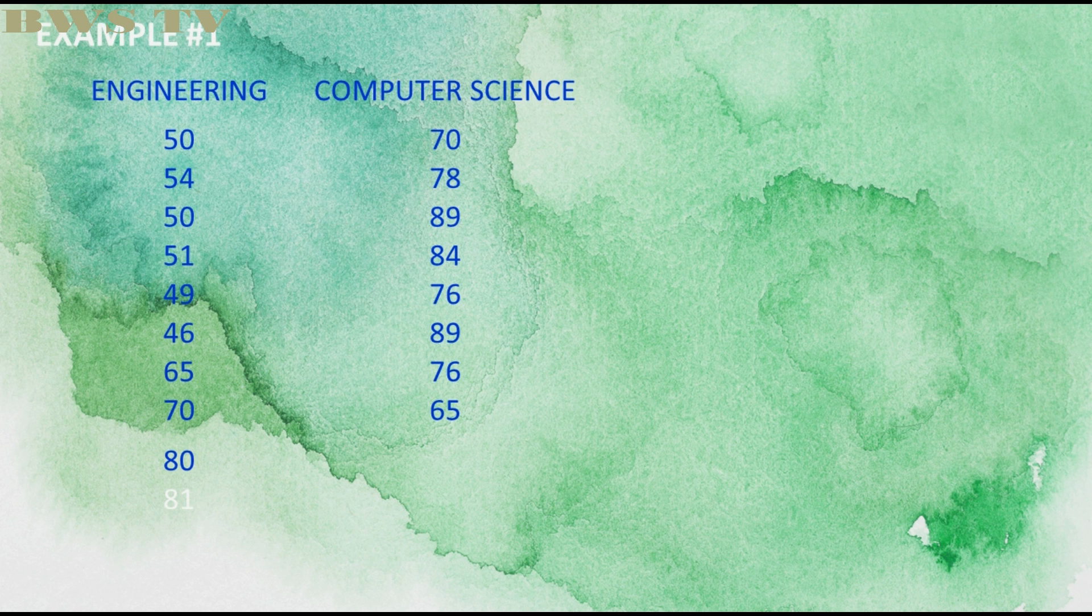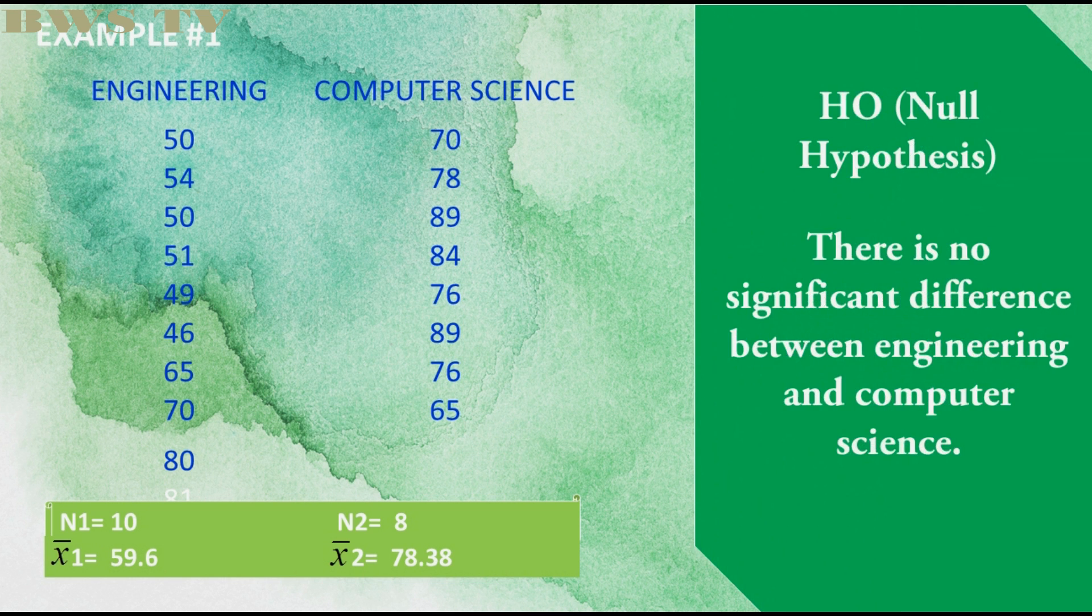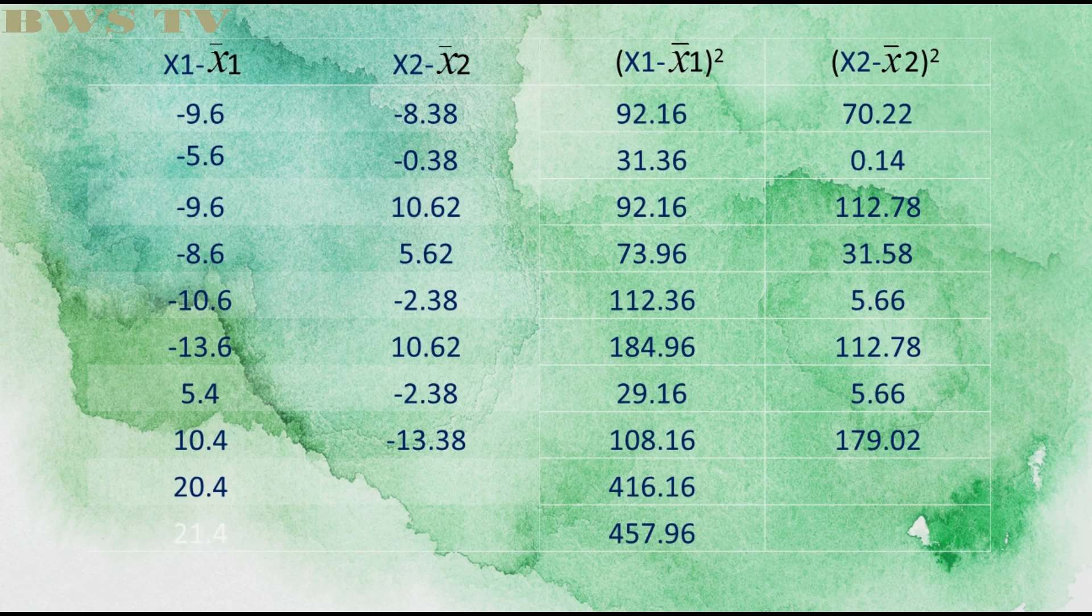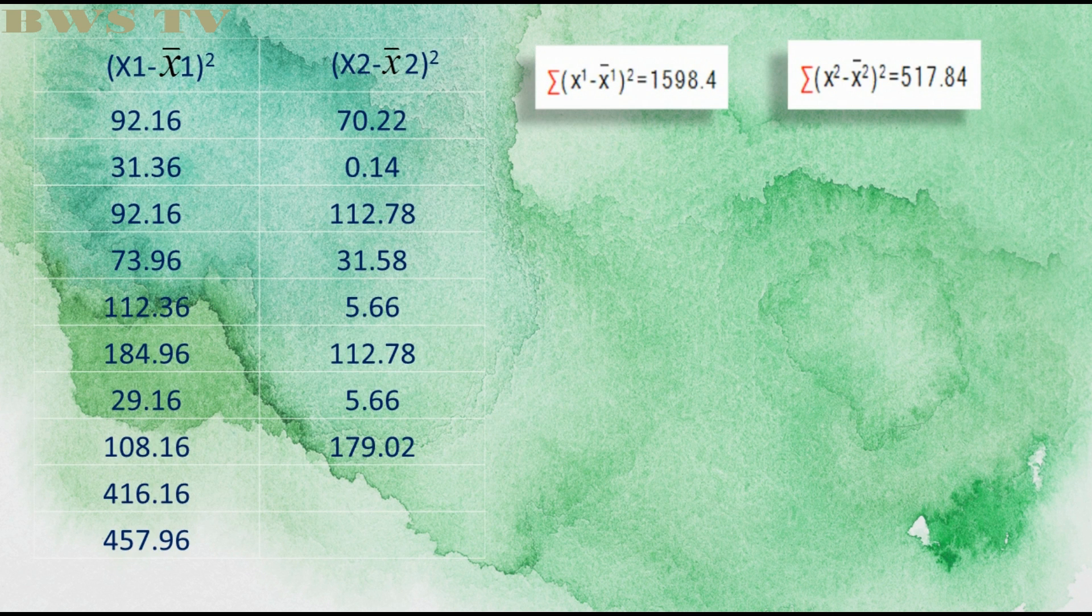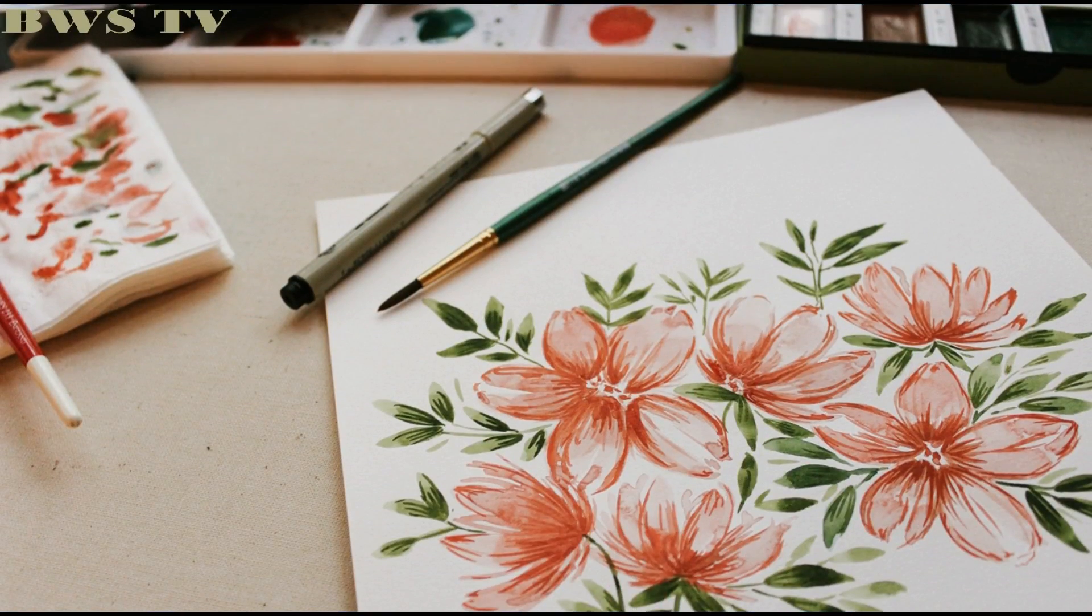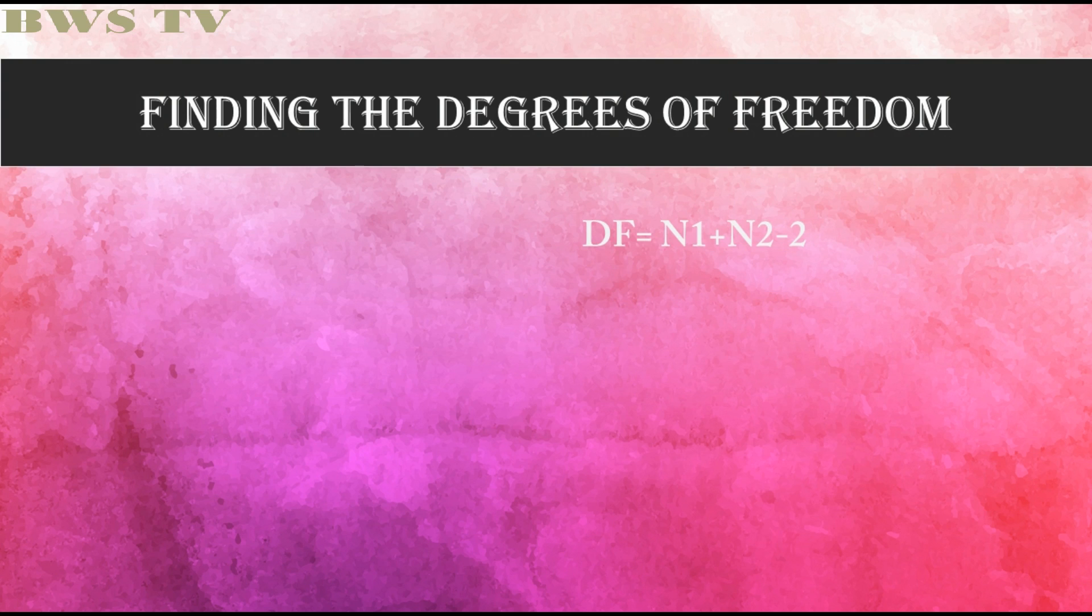So now we have your example number one. Here you can see engineering and computer science. Here in engineering will serve as our x1 and computer science as our x2. Now note that before getting t, we have to find first the v1 and v2. Like what was shown to you in the previous slide, complete the table first before proceeding in finding t. Here are the answers. Next, formulate the hypothesis. Then in getting the variance of both groups, substitute the formula v1 and v2. Next, substitute the formula given. Next, DF. DF is equal to n1 plus n2 minus 2. Substitute the formula to get the answer.